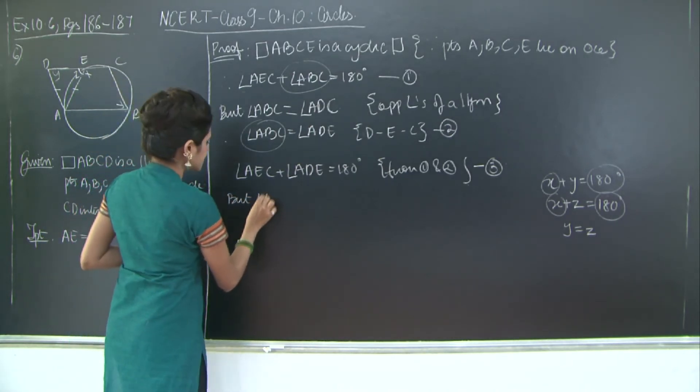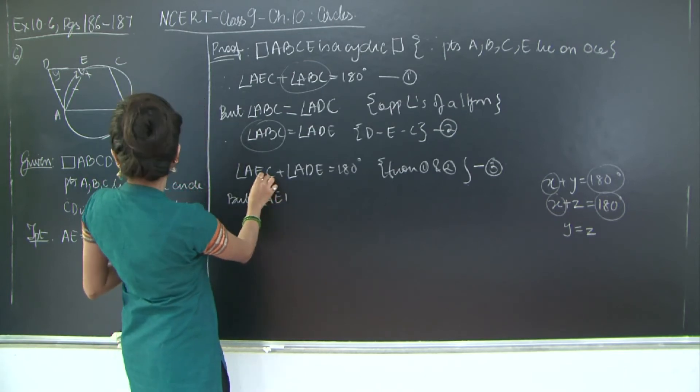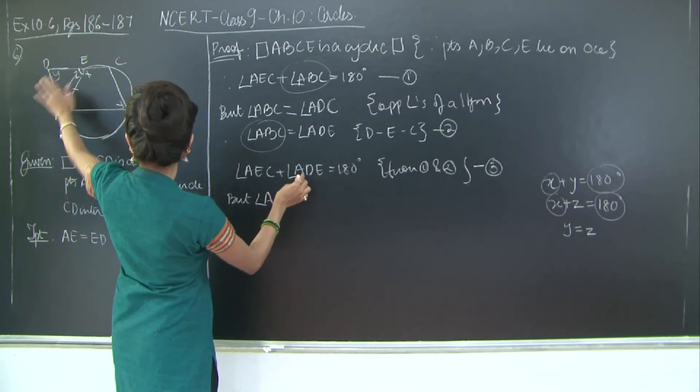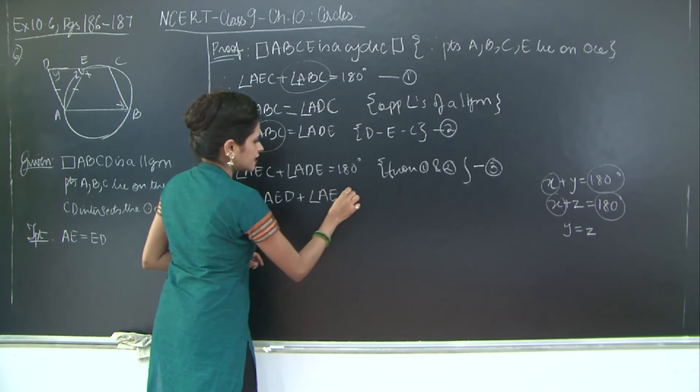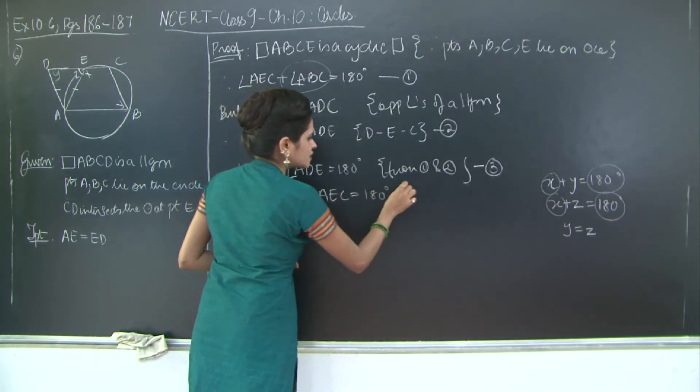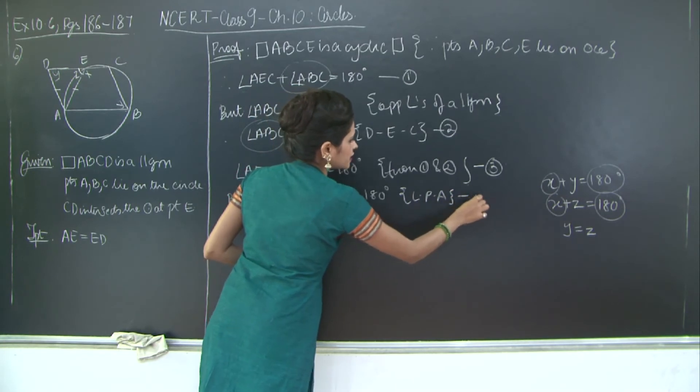But angle AED, just one moment, AEC plus ADE. But angle AED plus angle AEC is equal to 180 degrees through the linear pair axiom. Let's mark this as four.